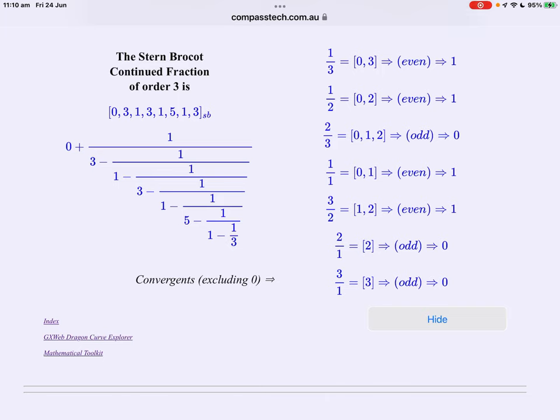But if you take a slice, take each convergent of your continued fraction, so we'll leave off the zero. If you slice at 45 degrees the first fraction you come to is one third. Now one third as a continued fraction is zero three. It has an even number of terms.